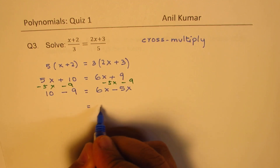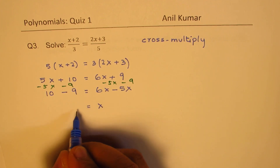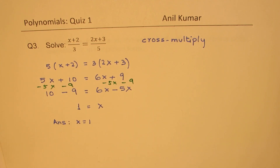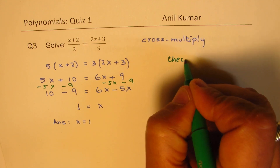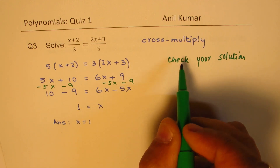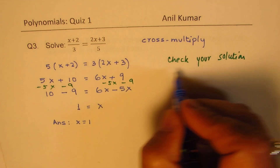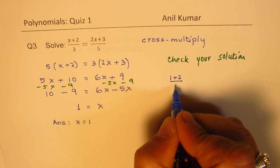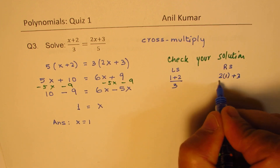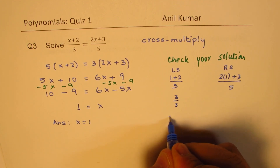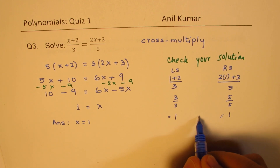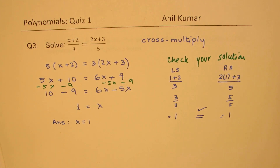What you could also do now is check your answer by substituting back. So if x = 1, the left side gives (1 + 2)/3, which is 3/3 = 1. The right side gives (2×1 + 3)/5, which is 5/5 = 1. Both sides equal 1, so it is the correct solution.